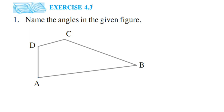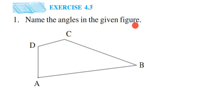Here's a question from exercise 4.3, first question. The chapter is Basic Geometrical Ideas. The question is: name the angles in the given figure. We have a polygon with four vertices, which means we have four angles.